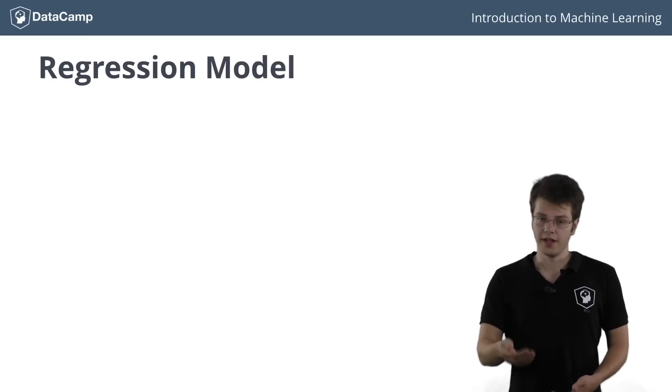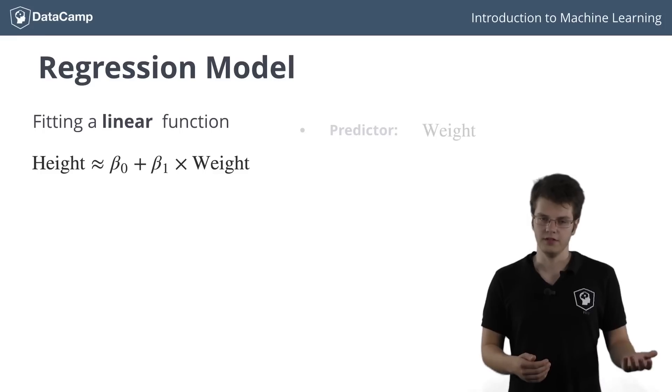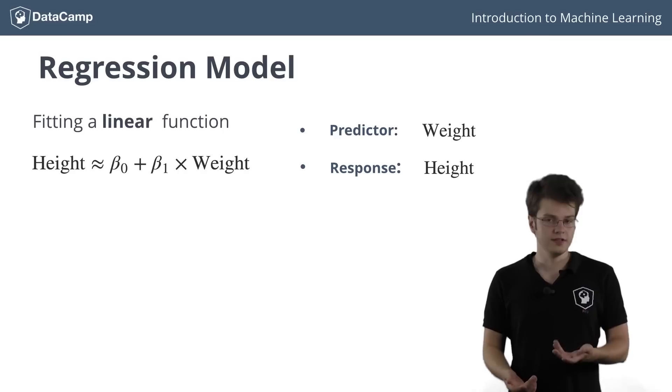Here, you're trying to fit a linear function between the predictor, the weight, and the response, the height. Together, beta0 and beta1 are known as the model coefficients or parameters.